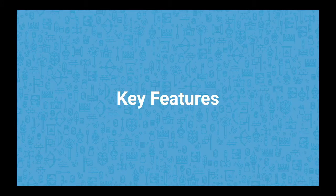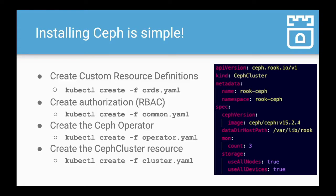Let me highlight some key features of Rook. First, simplicity. Installation involves installing common components including custom resource definitions, followed by the permissions Rook needs to operate. The user can then install the Ceph operator, configure the Ceph cluster resource as desired, and deploy it. There is an example of a very minimal Ceph cluster resource that shows it can be quite simply expressed.